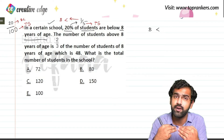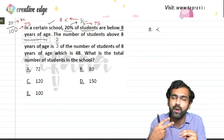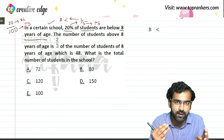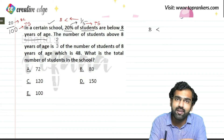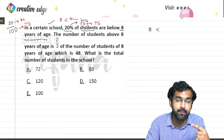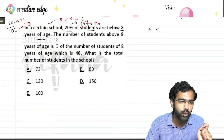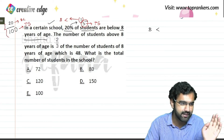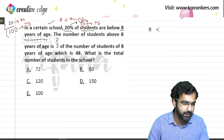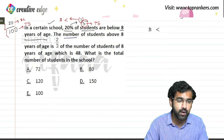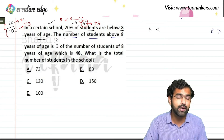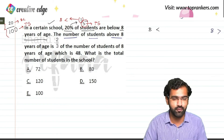On percentage scale, if there are 100 total students, then 20 students will be less than 8 years of age. On ratio scale, 20% as a fraction becomes 1/5, meaning if total students are 5, then 1 is below 8. Proceeding further, we are given that the number of students above 8 years of age are two-thirds of the students of exactly 8 years of age.